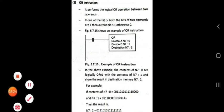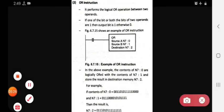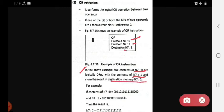So let's see this example in detail. Here we can see what is above example. In the above example, the content of N7:0 are logically ORed with the content of N7:1 and store the result in the destination of N7:2.